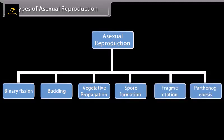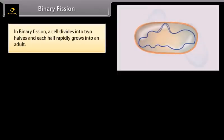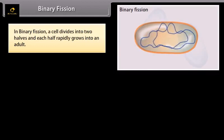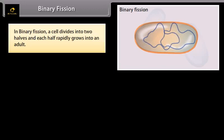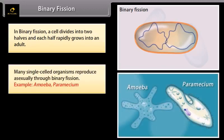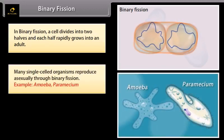In binary fission, a cell divides into two halves and each half rapidly grows into an adult. Many single-celled organisms reproduce asexually through binary fission.